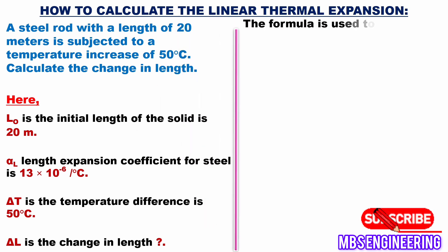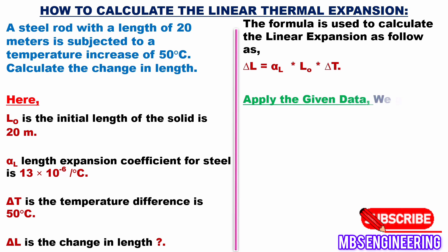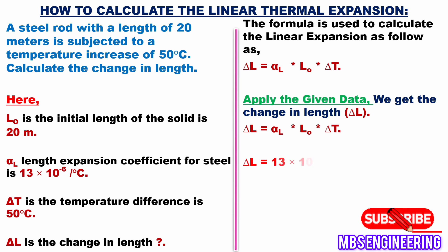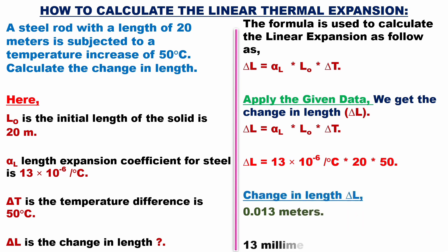Applying the formula delta L = alpha_L × L₀ × delta T, we get: delta L = 13 × 10⁻⁶ per °C × 20 × 50. The change in length delta L equals 0.013 meters, or 13 millimeters.